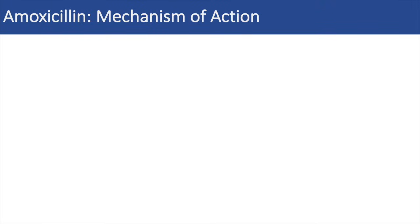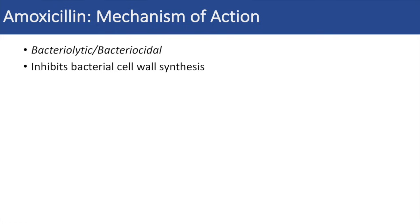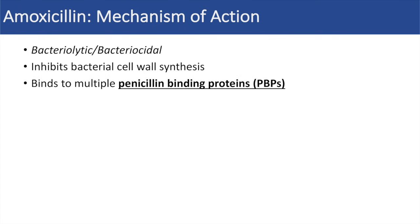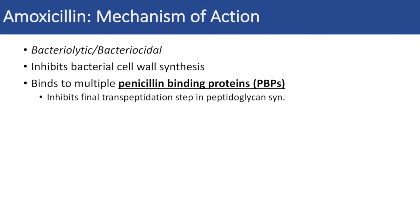So how does amoxicillin actually work? What is its mechanism of action? Well, first and foremost, amoxicillin is a bacteriolytic or bactericidal antibiotic, and it actually inhibits bacterial cell wall synthesis. It inhibits bacterial cell wall synthesis by binding to multiple penicillin binding proteins. These penicillin binding proteins are important during the transpeptidation steps of peptidoglycan synthesis, and in fact amoxicillin actually inhibits the final transpeptidation step in peptidoglycan synthesis.